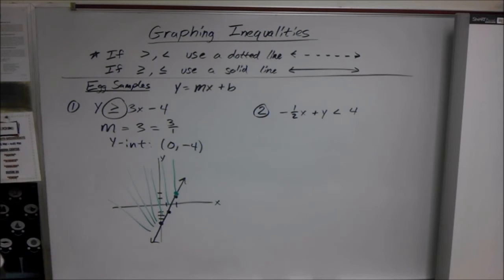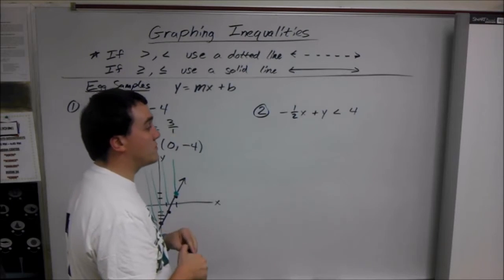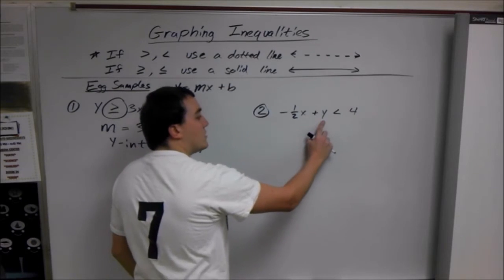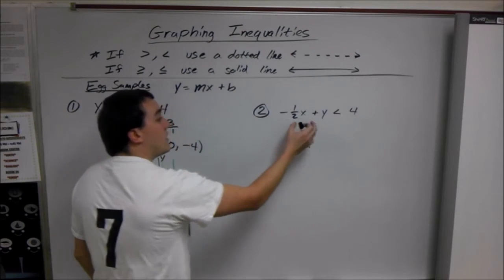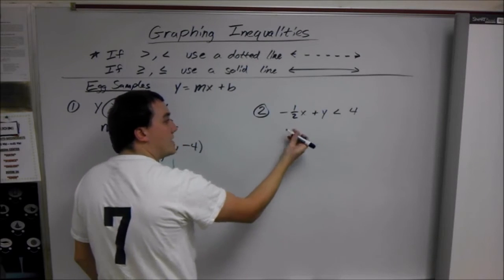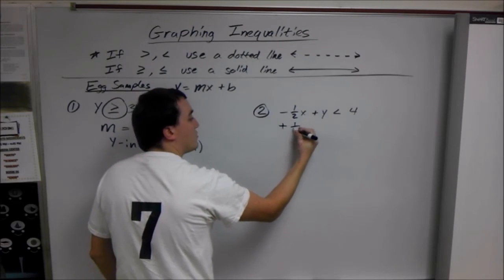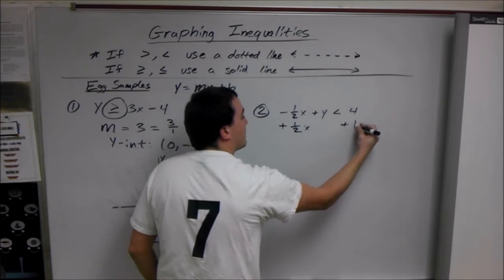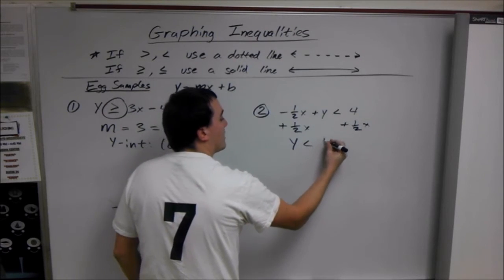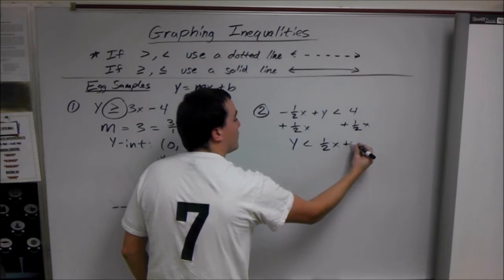Next example. It doesn't give it to us in y equals mx plus b form. So that's the first thing we want to do, is get it there. We want to get y by itself. And since we have another term on the side with it, we're going to have to add to get rid of it, since it's negative. So we get plus 1 half x plus 1 half x. So we get y is less than 1 half x plus 4.